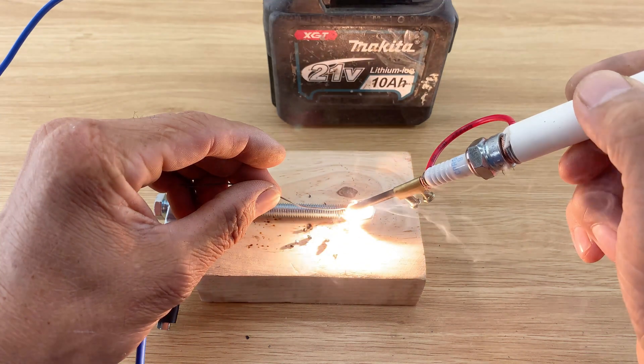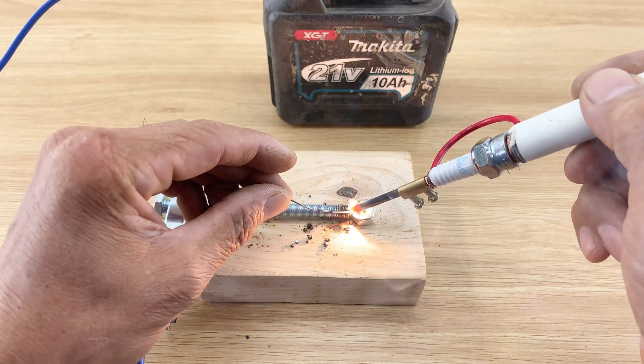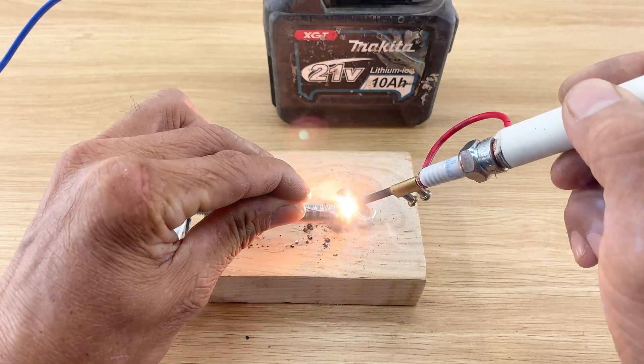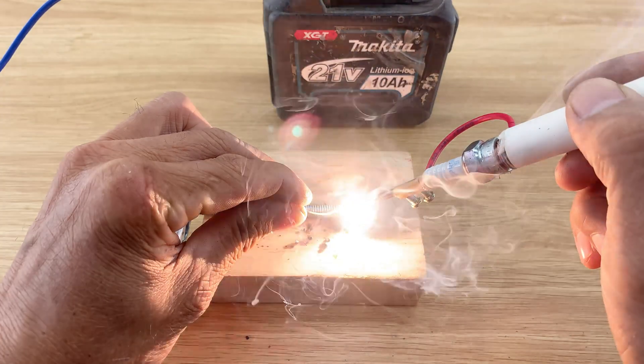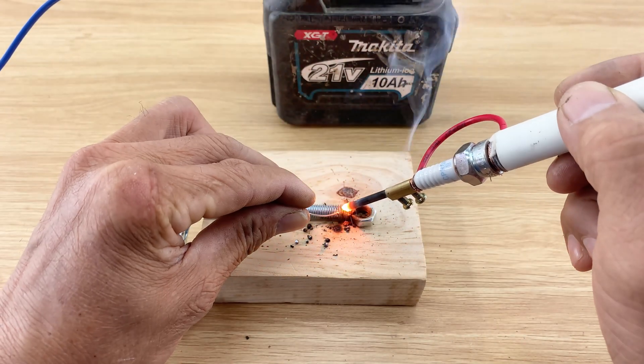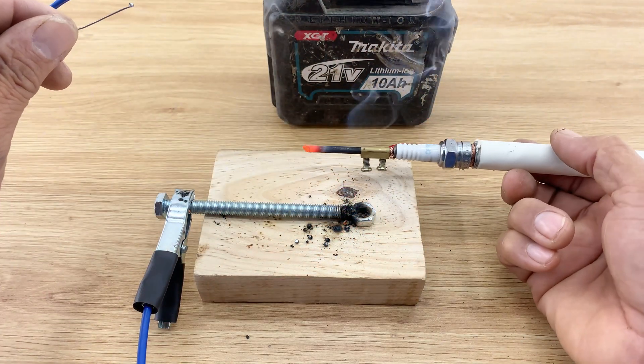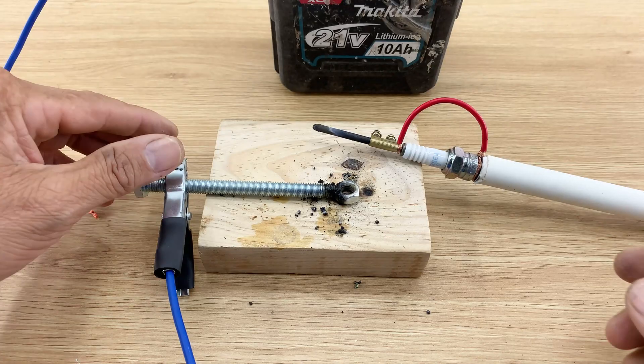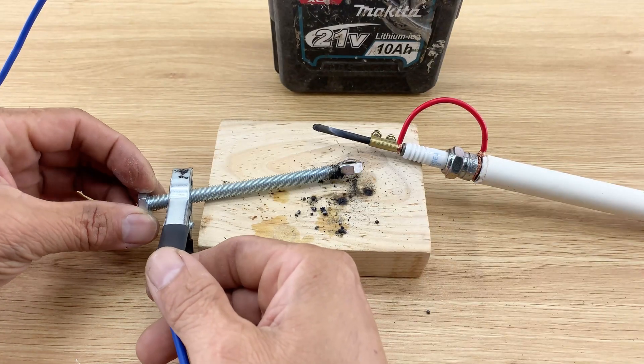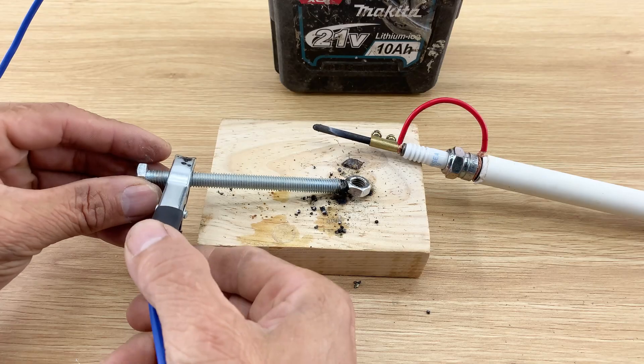I pressed the tip against the bolt, and you can see it heating up intensely, glowing red hot. The tool is generating enough heat to visibly scorch and burn the surface of the metal, demonstrating its power to heat through even thick materials. This really showcases the raw heating power of this simple spark plug modification.